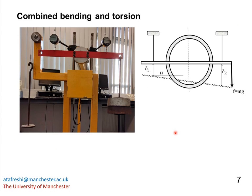For the combined bending and torsion case, loads of 5 kg up to 20 kg are applied only on the right hand side of the tube. Delta L and delta R are the measured left and right tip deflections respectively. Theta is the angle of twist of the tube, which can be calculated using the measured tip deflections. Using the superposition rule, the corresponding analytical solution can be obtained by combining the solutions for pure bending and pure torsion.